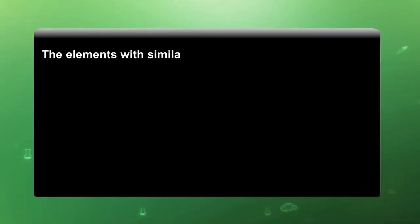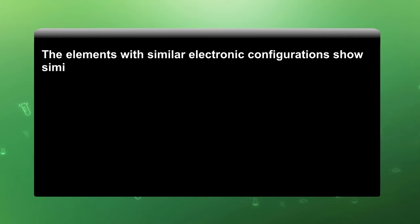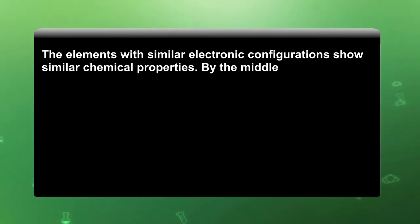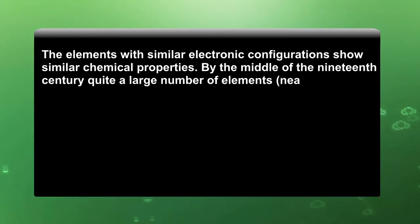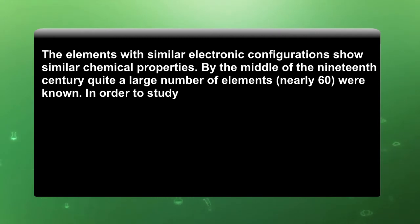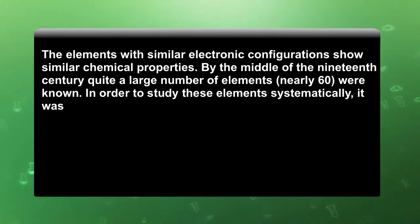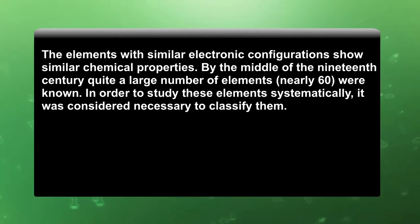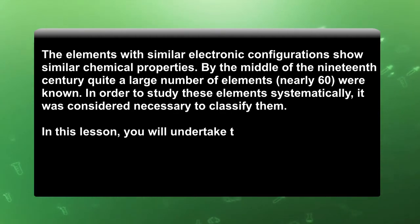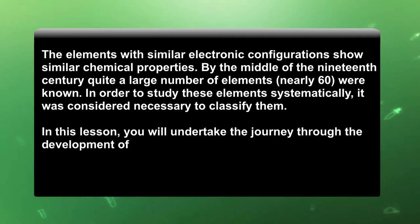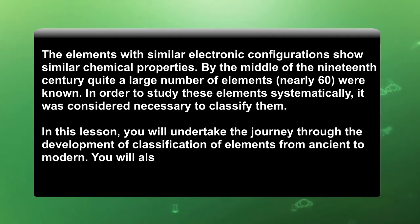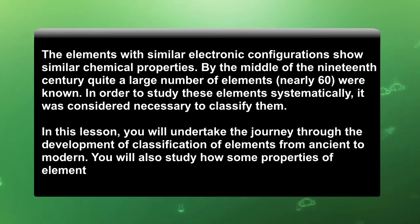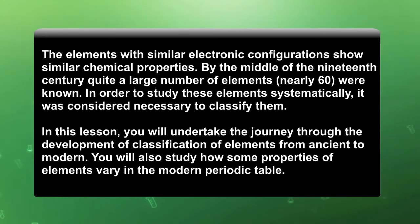Elements with similar electronic configuration show similar chemical properties. By the middle of the 19th century, quite a large number of elements — nearly 60 — were known. In order to study these elements systematically, it was considered necessary to classify them. In this lesson, you will undertake the journey through the development of classification of elements from ancient to modern, and you will also study how some properties of elements vary in the modern periodic table.